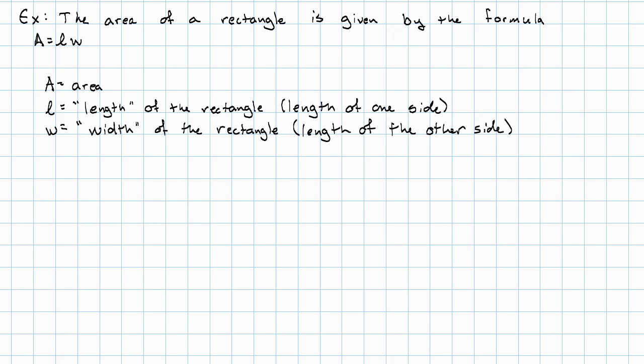Now, partly because multiplication is commutative, and partly because rectangles' areas stay the same no matter how we turn them around, it doesn't really matter which side we call the length and which side we call the width.